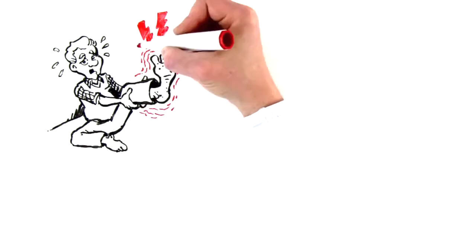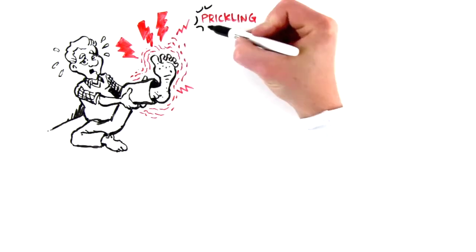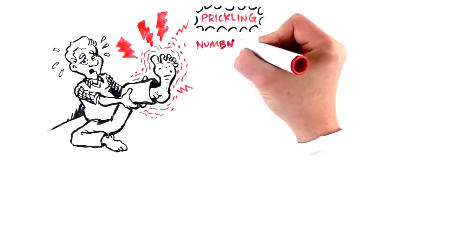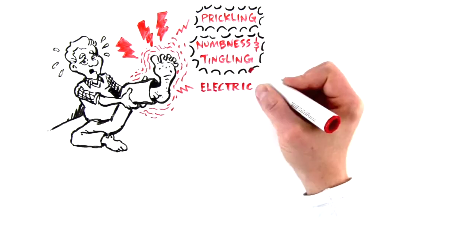Prickling, numbness and tingling, unexpected electric-like shocks that travel through the bottom of your feet all the way up to your legs. You might even feel like you constantly need to move your legs or feet, especially while you're sleeping.